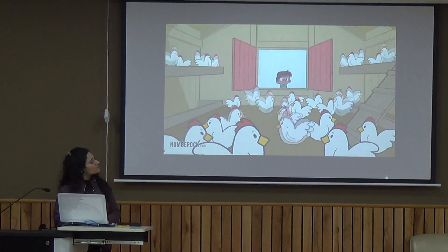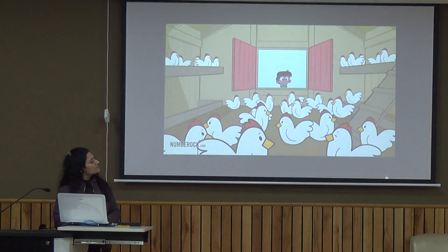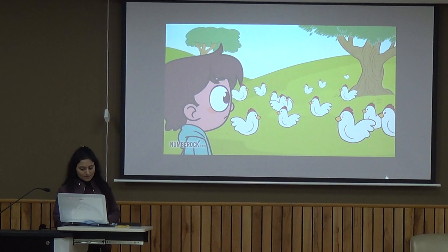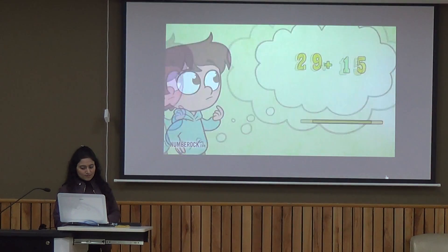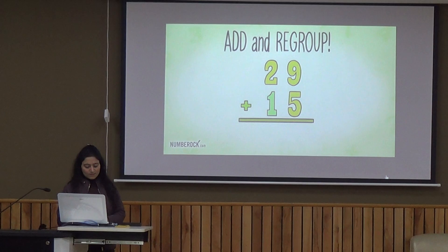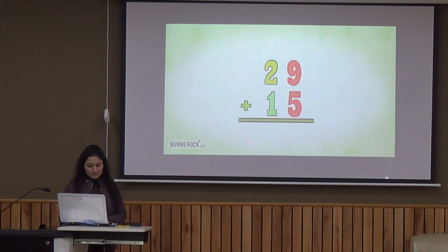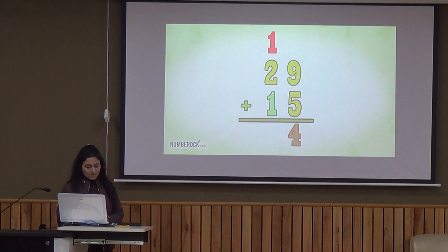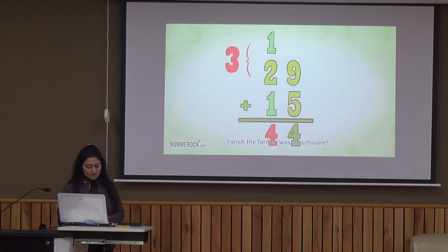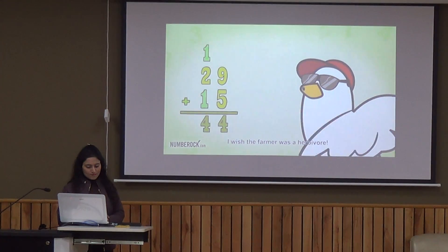29 hands are inside, 15 hands are outside. To find out how many hands are in the group, we've got to know how to add and regroup. 9 plus 5 equals 14 — write the 4, the 1 ten carries. 1 plus 2 is 3, plus 1 is 4.